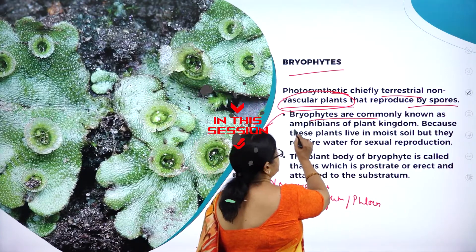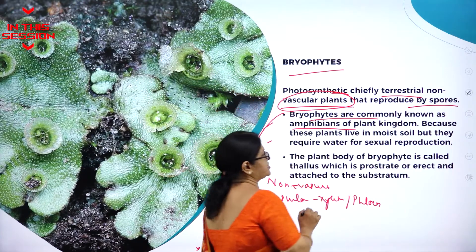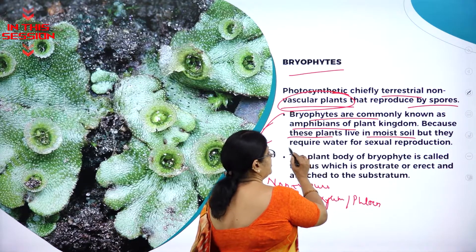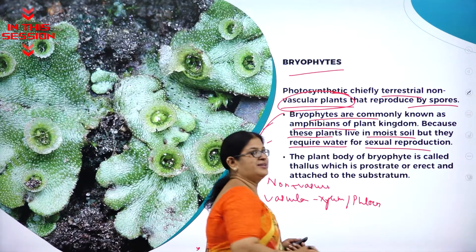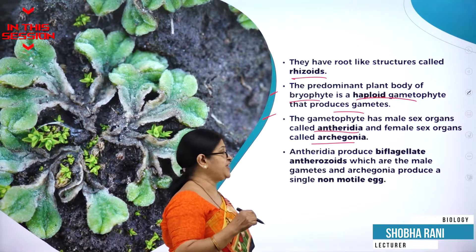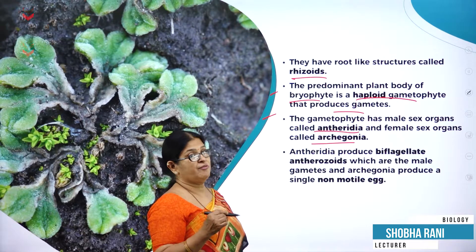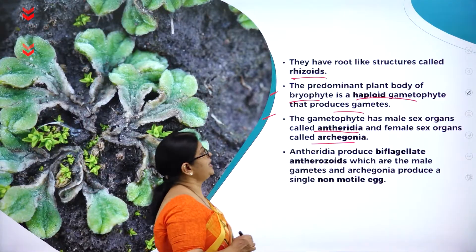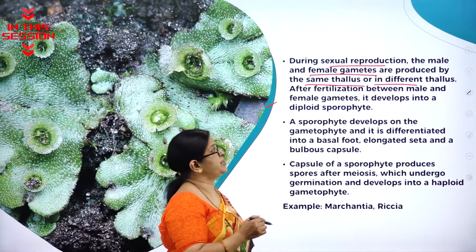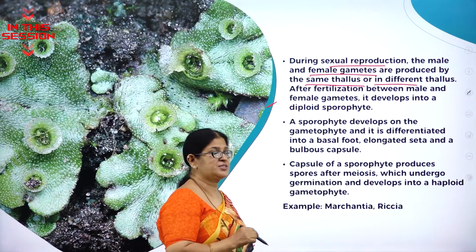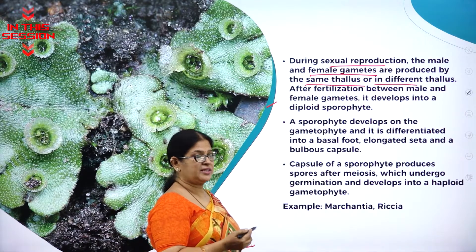Bryophytes are commonly known as amphibians. Why? Because these plants live in moist soil but they require water for sexual reproduction. Anthridia produces motile, biflagellate antherozoids whereas archegonia produce a single non-motile egg. During sexual reproduction, the male and female gametes are produced either by the same thallus or by different thallus.